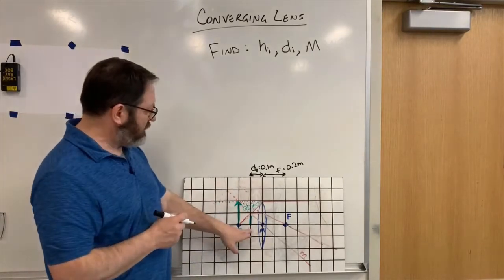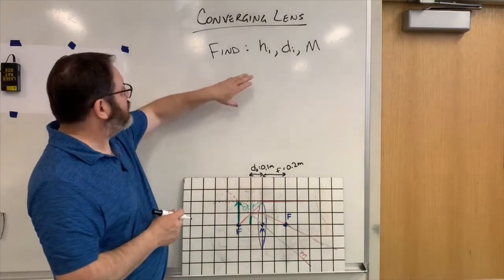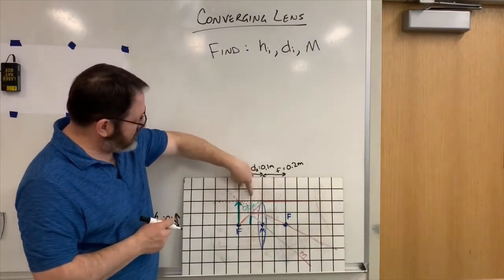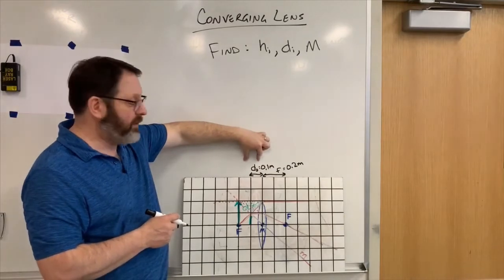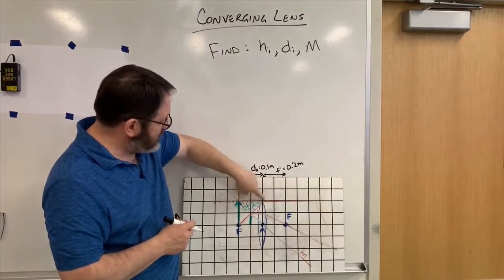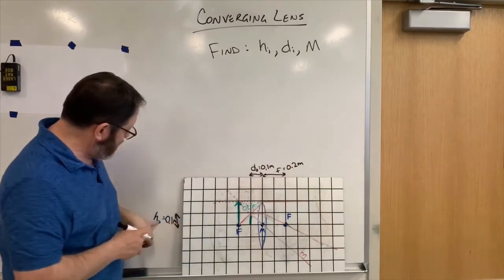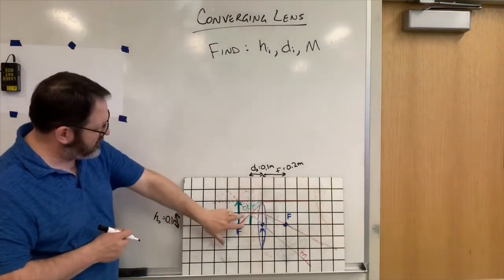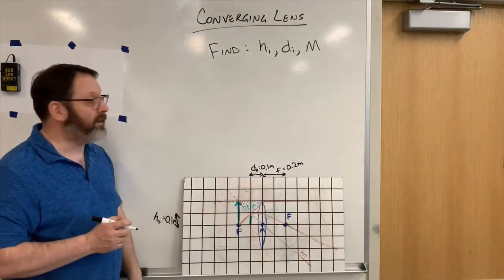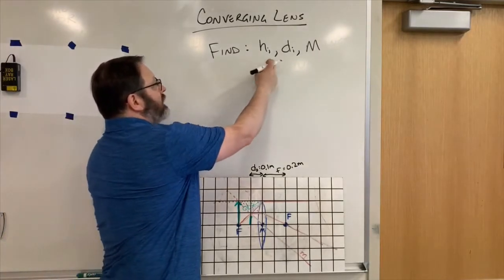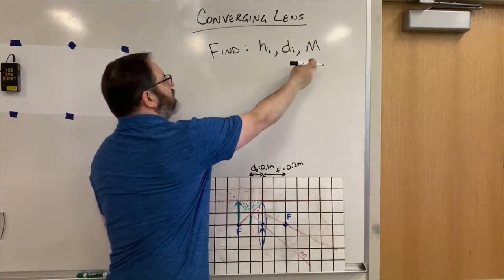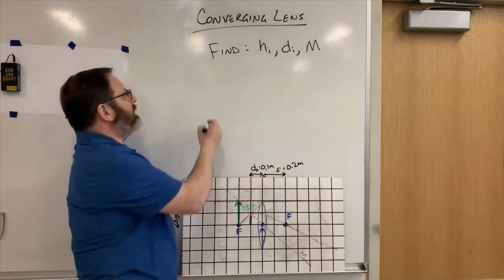So given this object and this lens, the object is at a distance 0.1 meters away from the lens, the focal length of the lens is 0.2 meters, and the height of the object here is 0.1 meters. So find H of the image, D of the image, and the magnification.